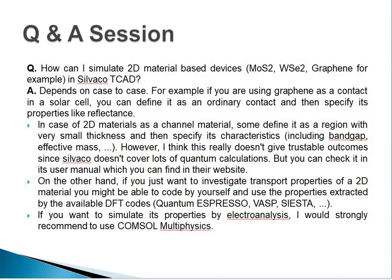If you are using a 2D material as a channel material, some define it as a region with very small thickness and then specify its characteristics including band gap, effective mass, mobility, and density of states. But I have a suggestion: if you are using graphene in Silvaco Atlas, you will not get trustable outcomes, since Silvaco does not cover many quantum calculations. You can check this in its user manual found on the website. On the other hand, if you just want to investigate the transport properties of a 2D material, you might be able to code it yourself and use properties extracted by available DFT codes.